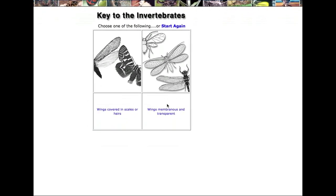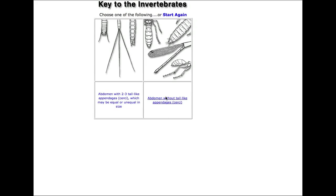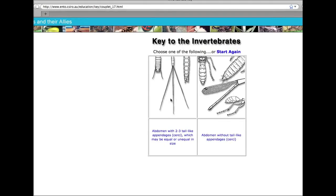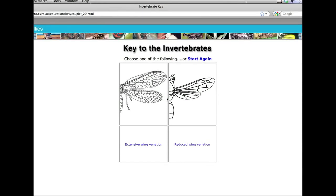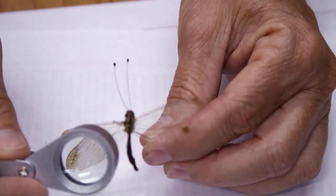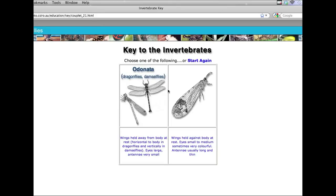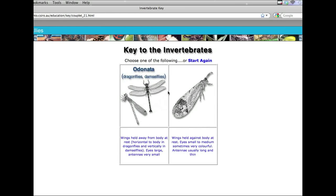There are no hairs on this, so the wings are membranous and transparent. The next question is about the abdomen — does it have long tail-like things? No, it does not. Does it have extensive wing venation? That means lots of little lines in the wing. If I look carefully, yes, there are lots of little lines. It's a little difficult since this one's been pinned, but are the wings held away from the body?